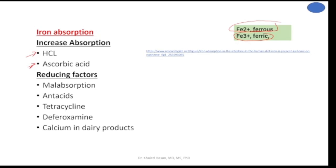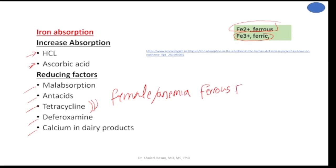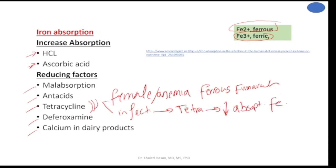There are some factors that decrease absorption of iron, such as malabsorption, antacids, tetracycline, desferrioxamine, calcium, and dairy products. For example, if a female patient suffers from anemia and you prescribe ferrous fumarate, then the patient also needs tetracycline for another condition — tetracycline will decrease absorption of iron, and we need to take this into consideration.